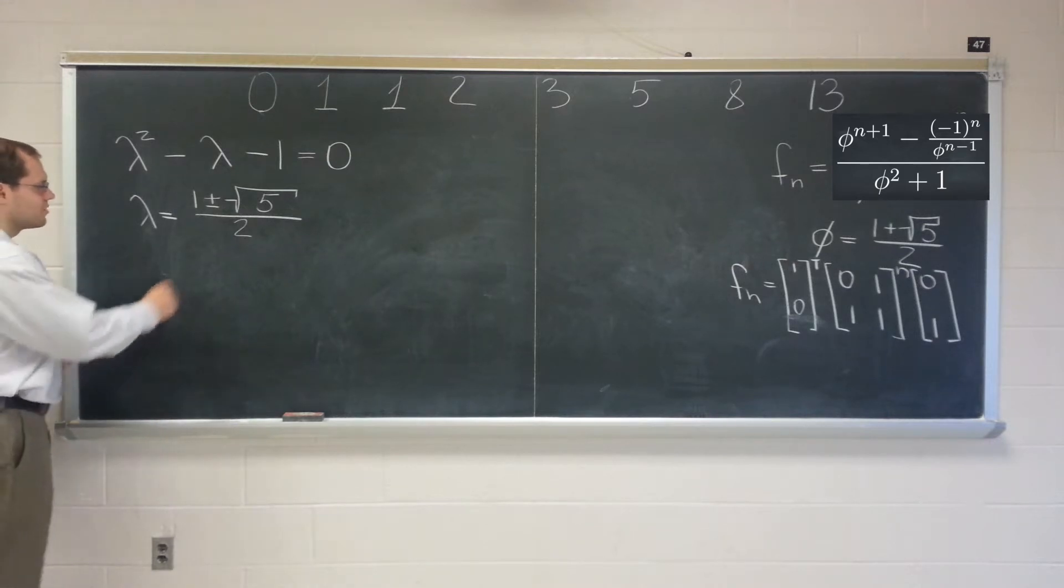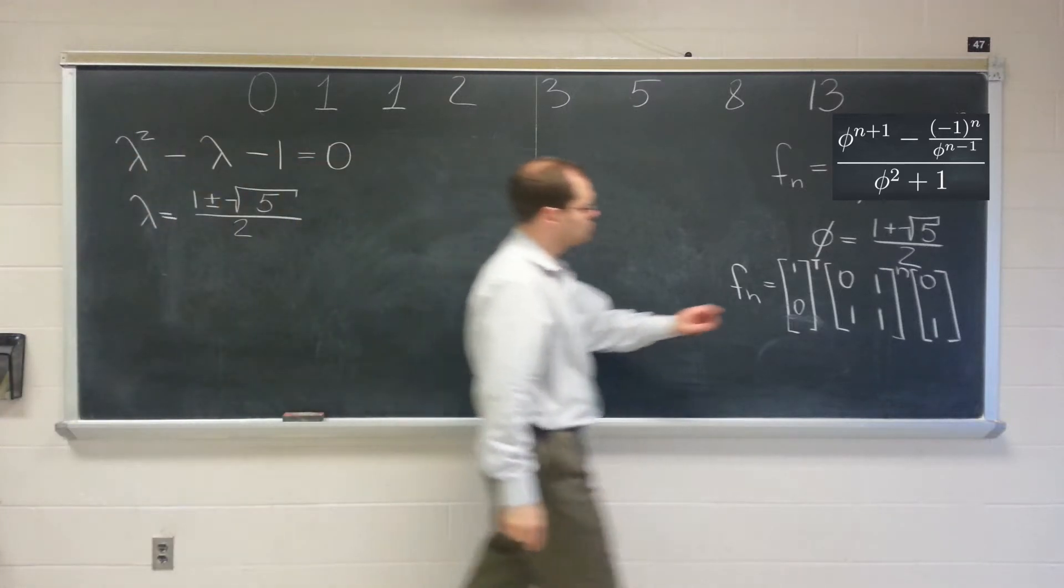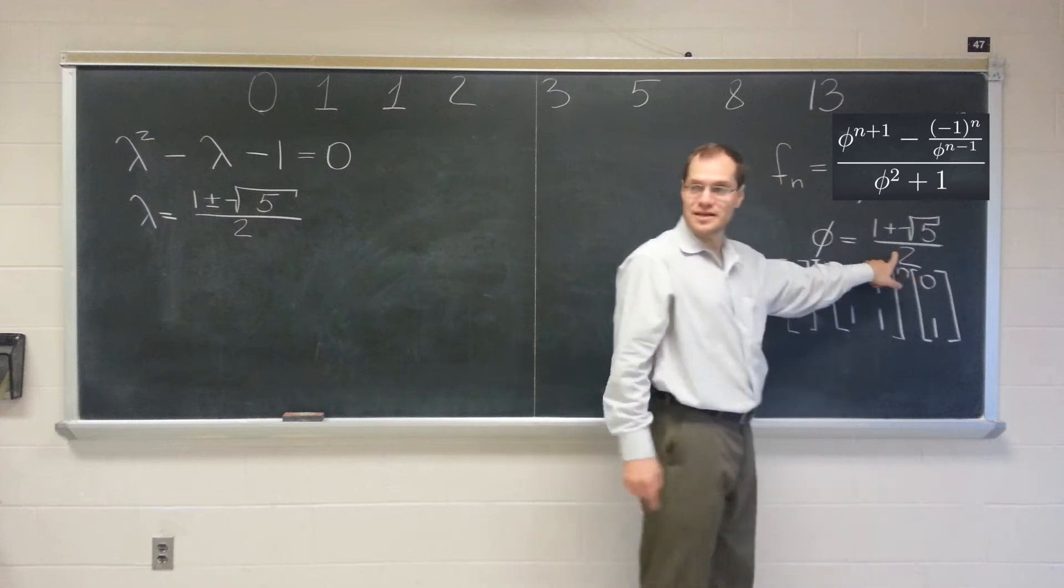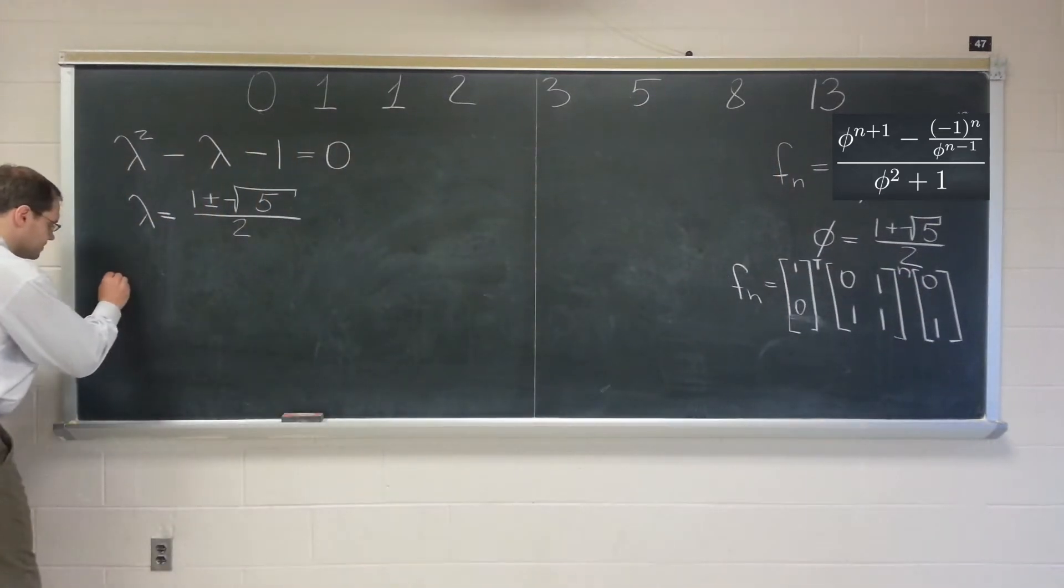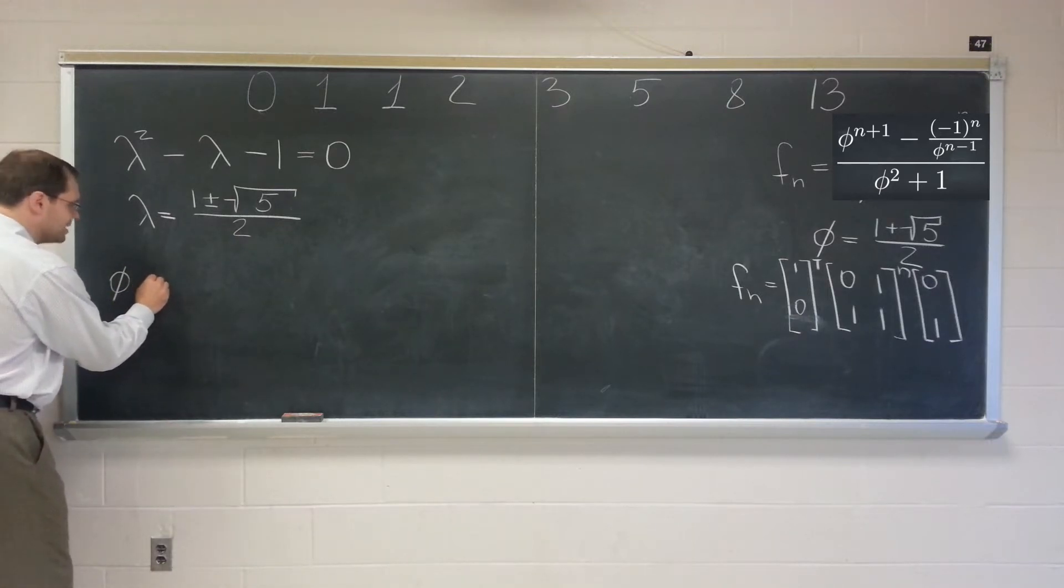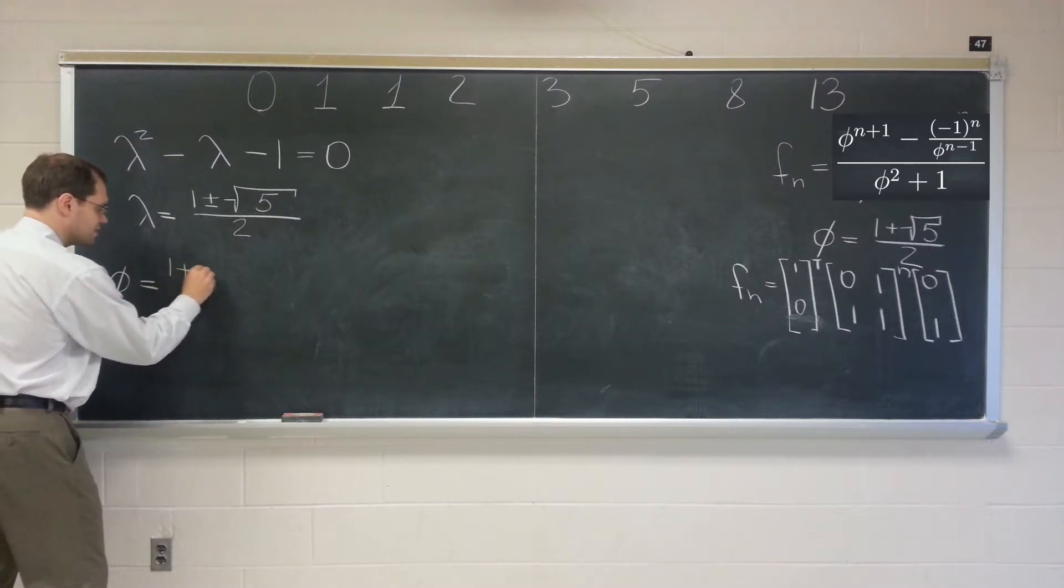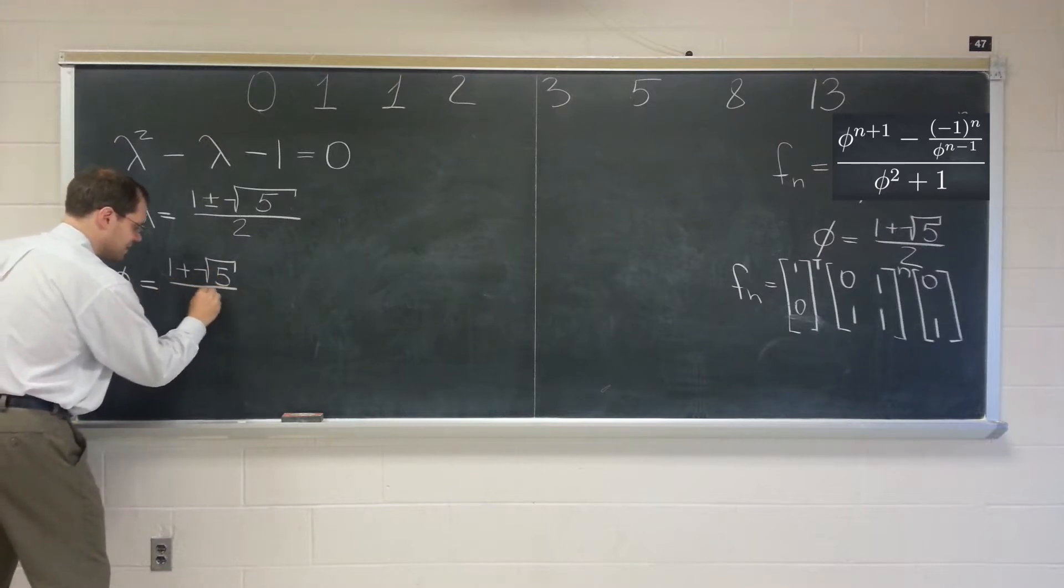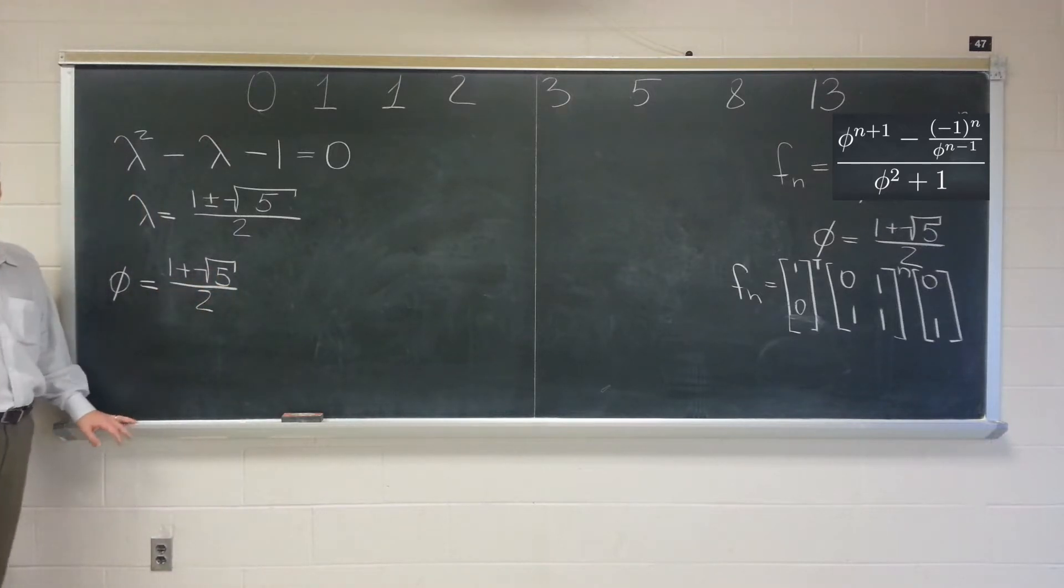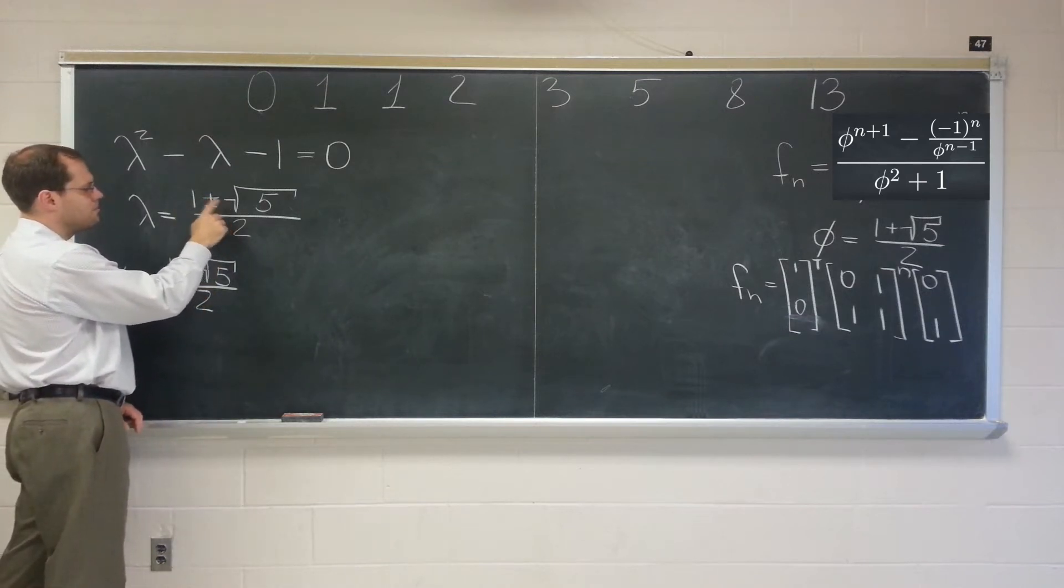Okay, so one of them is 1, plus square root of 5, divided by 2, which is denoted by phi. So that's where phi comes from. So one of them is phi. And the other one, so let me just write, phi equals 1, plus square root of 5, divided by 2. So that's one of the eigenvalues. Let's think about the other one.